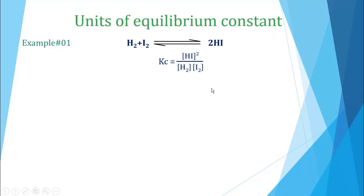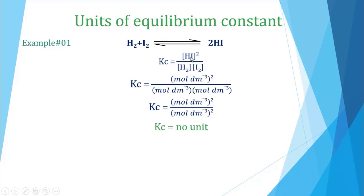To find the unit of equilibrium constant expression for any reaction, you write the equilibrium constant expression. The unit of concentration is mole per cubic decimeter — this is also called molar concentration. Now we write the units of concentration for HI, H₂, and I₂ in the expression. HI concentration unit is mole per cubic decimeter raised to power 2 in the numerator. H₂ concentration unit is mole per cubic decimeter and I₂ concentration unit is also mole per cubic decimeter in the denominator.